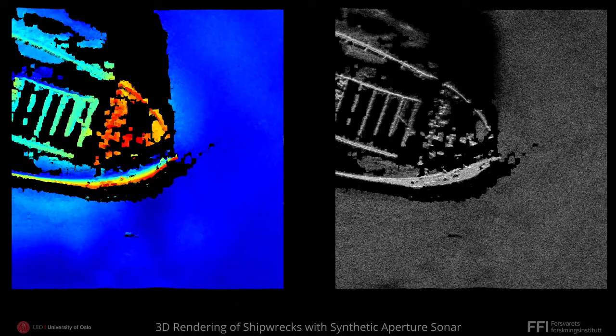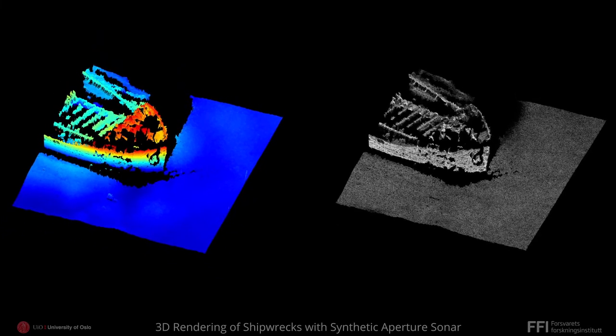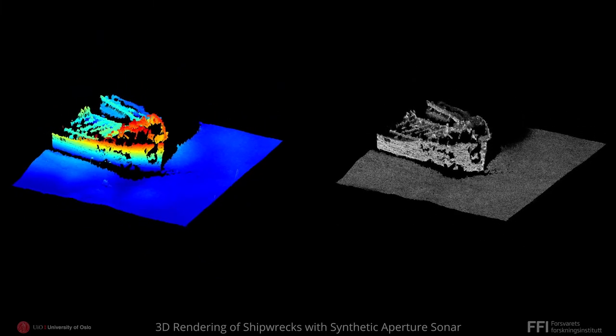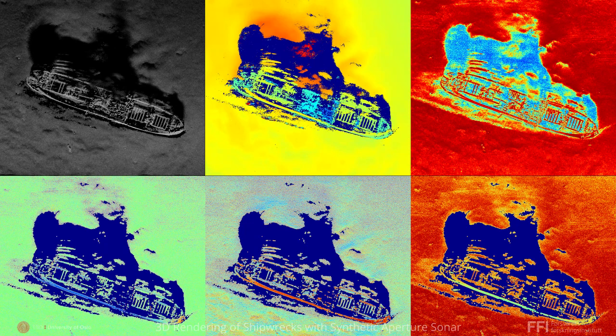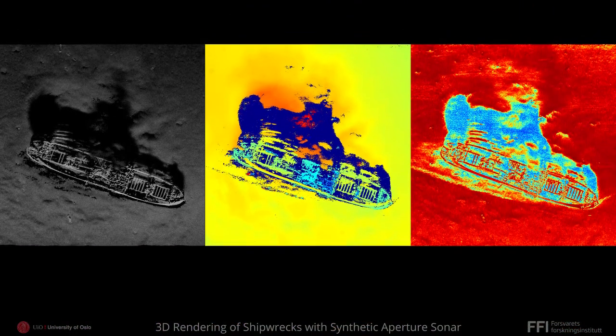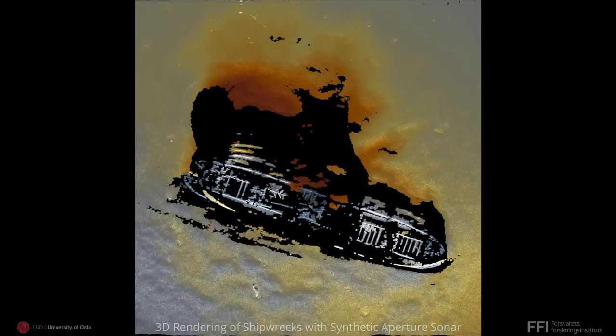Coloring the data is where the science becomes an art. We have already shown coloring by depth and backscatter values, which are very common in scientific visualization. But we have a lot of different data products that contain complementary information, and if we can incorporate more of that in a way that improves perception, we should. Here's an example of a method we call fusion coloring, where we mix the backscatter, depth, and coherence or quality with a custom color map in order to produce new colors. We will focus on point cloud rendering from here on out.